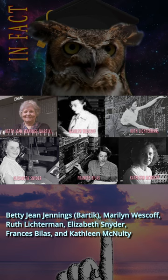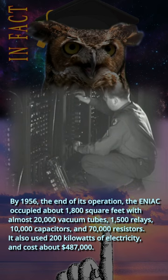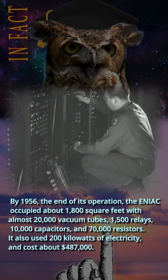By 1956, the end of its operation, the ENIAC occupied about 1,800 square feet with almost 20,000 vacuum tubes, 1,500 relays, 10,000 capacitors, and 70,000 resistors. It also used 200 kilowatts of electricity and cost about $487,000.